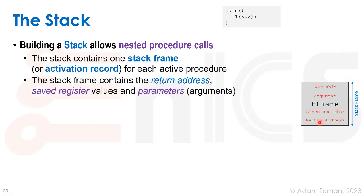What the stack frame includes is, of course, the return address that we had to store — though it can also be stored in a register rather than inside the frame. It's going to store saved registers: these are registers that may be overwritten by the f1 function, and then main may want to use them afterwards since it has to return to the same state. Arguments are also stored here — some we can pass through registers, but others we store on the stack to provide more space beyond the limited number of registers. And the different variables used inside f1 will be stored, changed, and accessed on the stack.